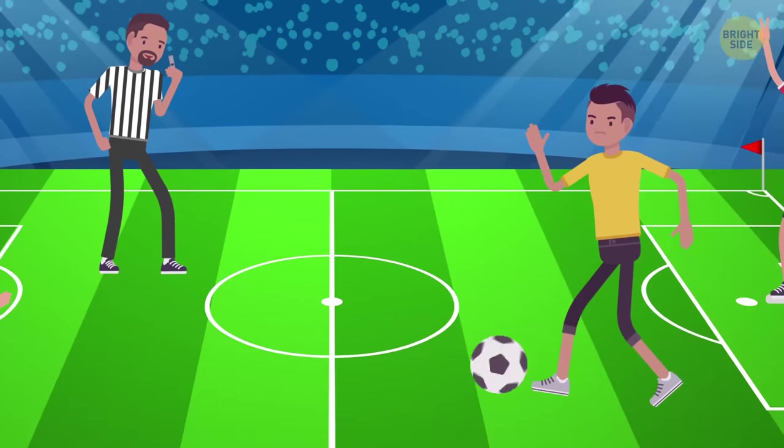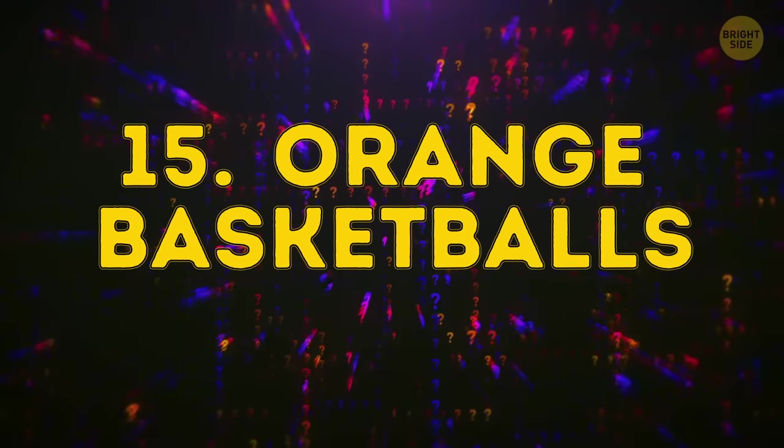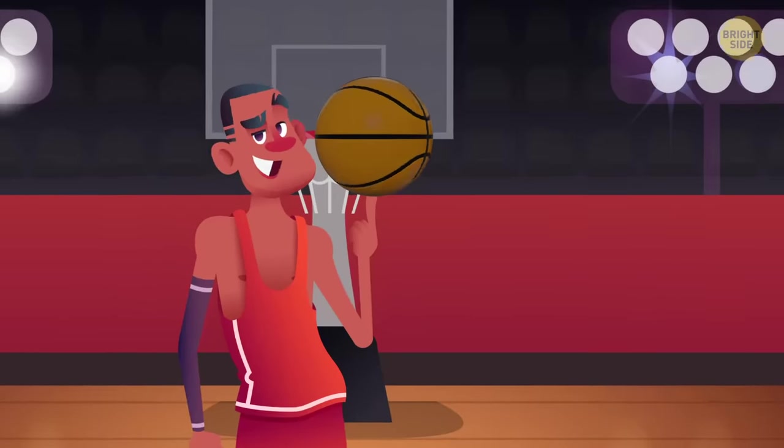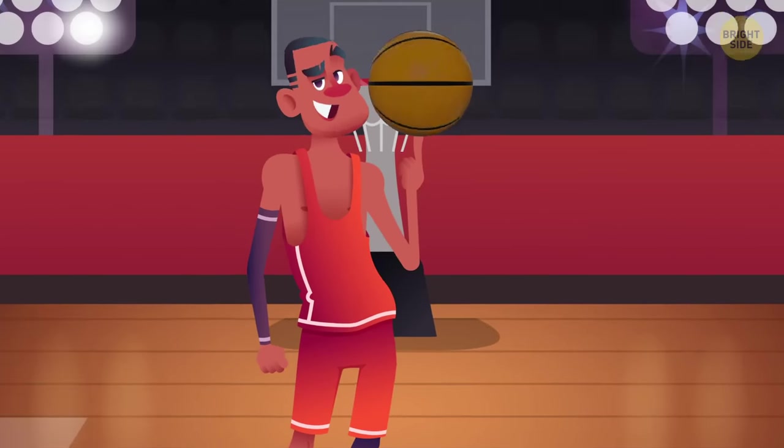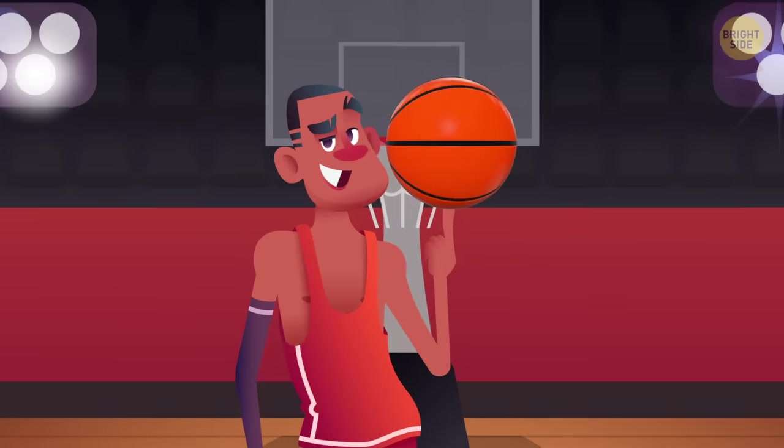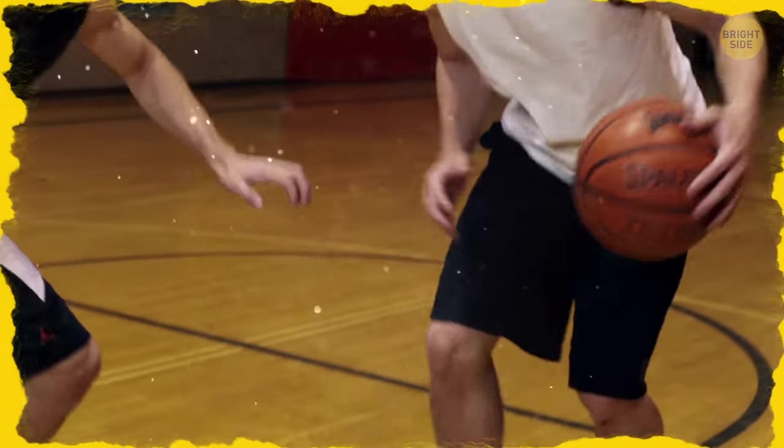Now, since we're on the topic of sports, orange basketballs. The first basketballs were brown leather. Yeah, brown as in the same color as the wooden court. In the 1950s, they switched to orange because it was easier to see.